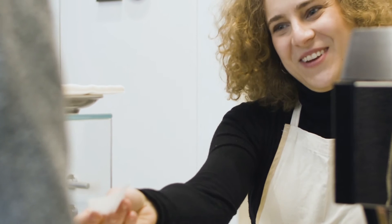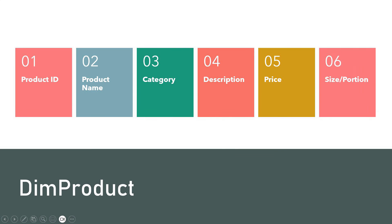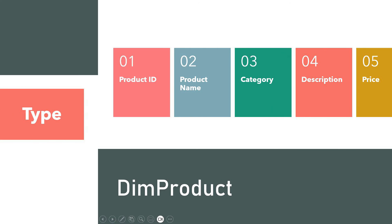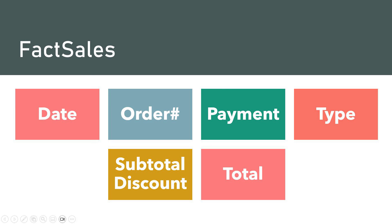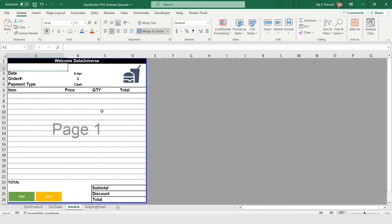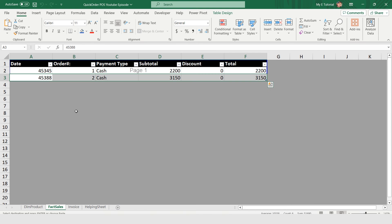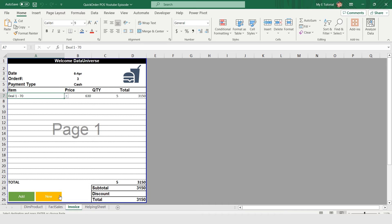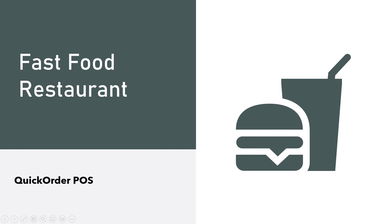That's where our story takes a turn. I thought, let's use Excel — a computer tool — and make things better for them. I made a food list with columns: Product ID, Product Name, Category, Description, Price, and Size. I also made another sheet for their orders called the Order History, with columns: Order Date, Order Number, Payment Type, Subtotal, Discount, and Total. We are making this hand-done system into a computerized one, including a good-looking invoice where I can add orders. If I press 'Add,' it transfers data to the sheet; if I press 'New,' a blank invoice is ready for the next transaction. This is the introduction of this powerful invoice point-of-sale system.